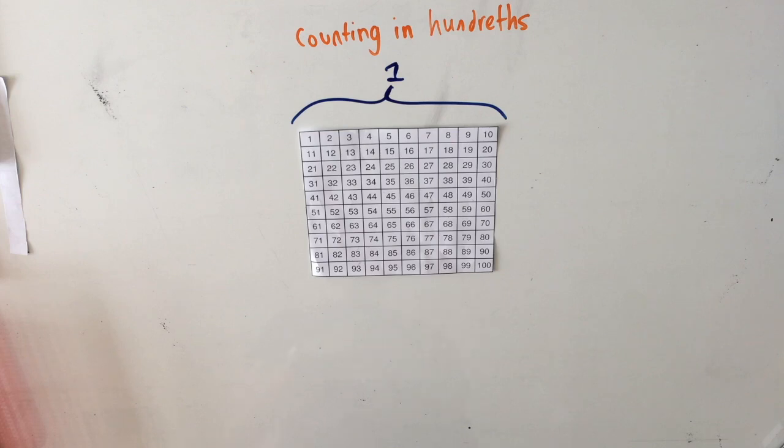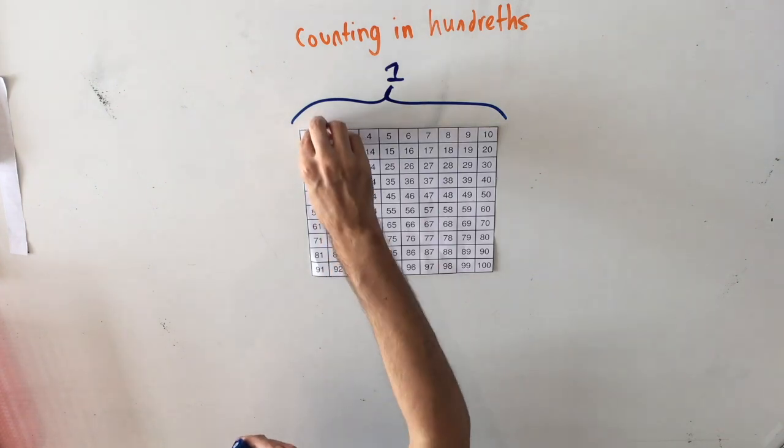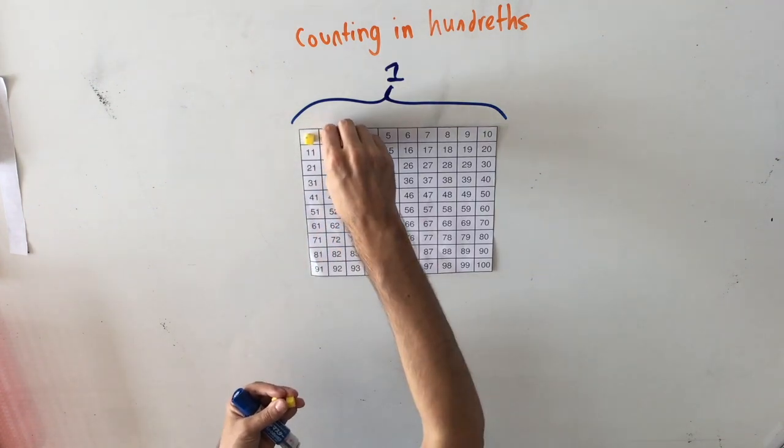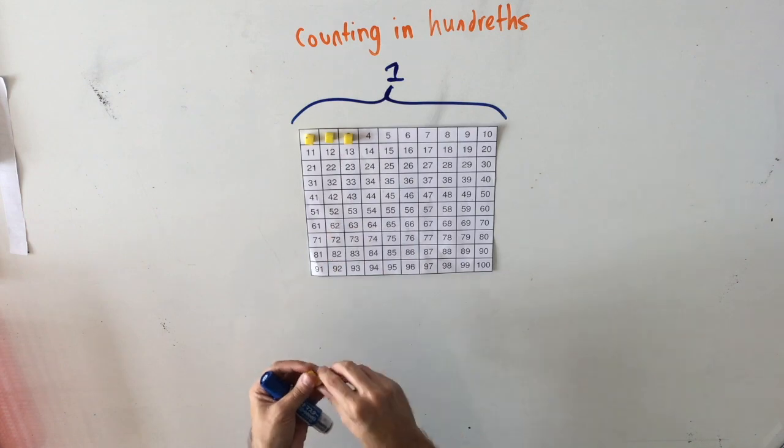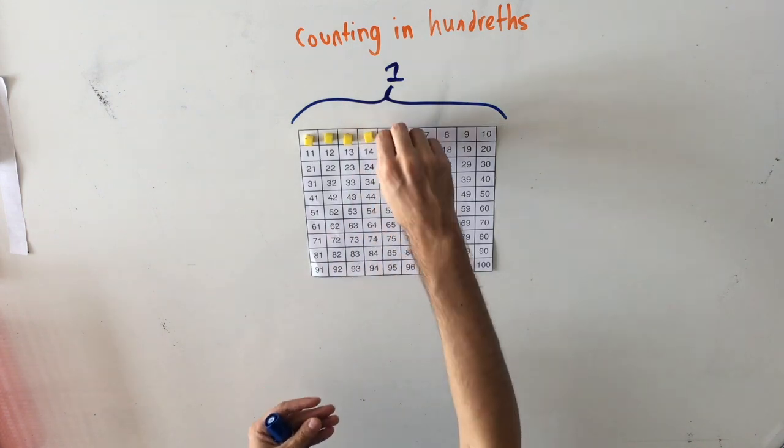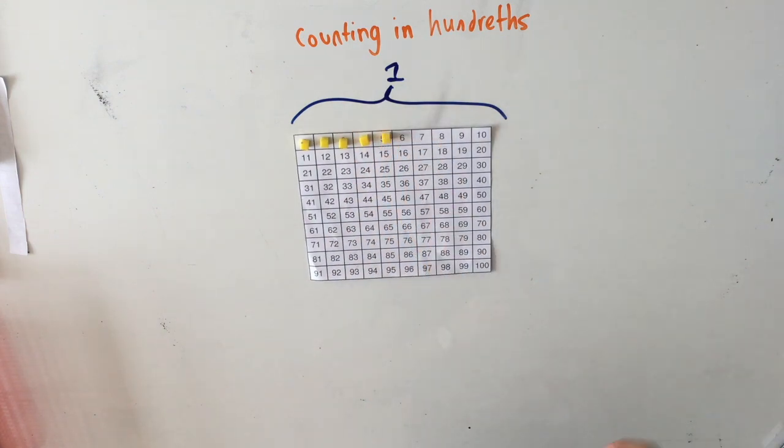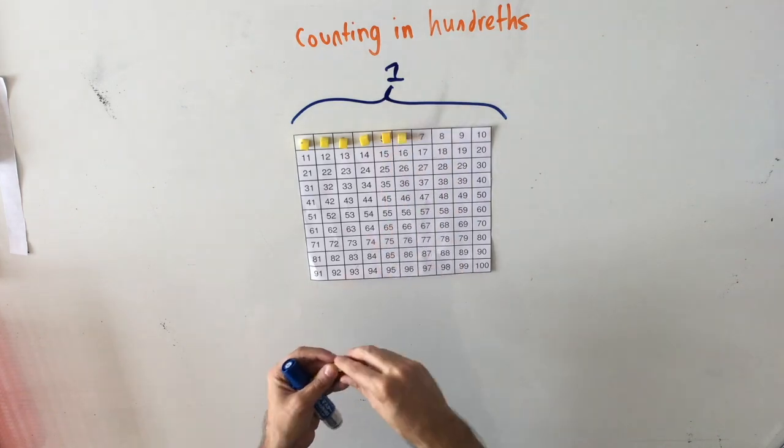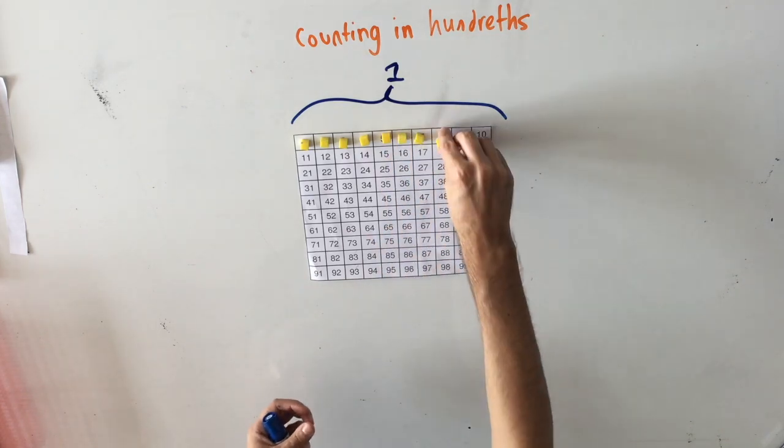I'm going to show you how to count that using deans and covering up some of the one hundredths. Here you can see I'm using a concrete strategy to cover up this whole. Let's see how many hundredths I've covered up.